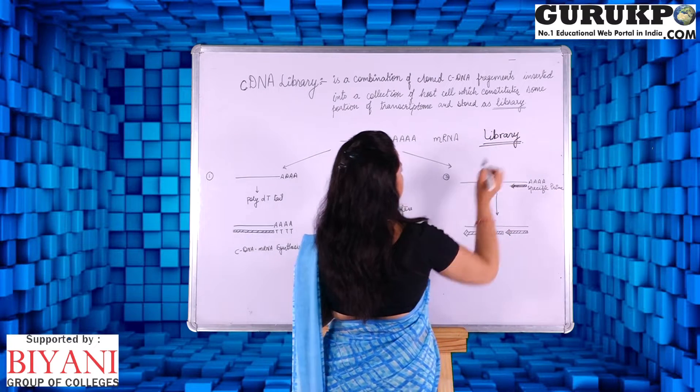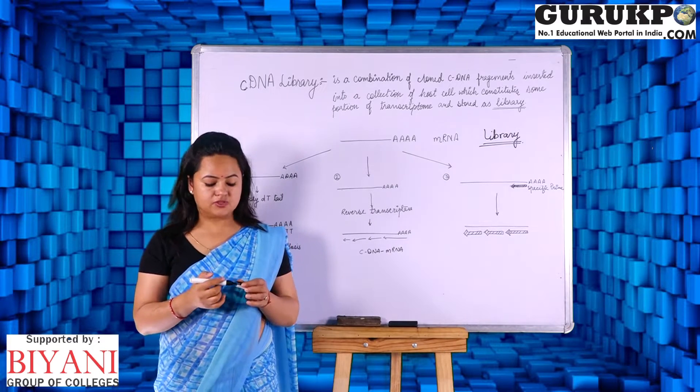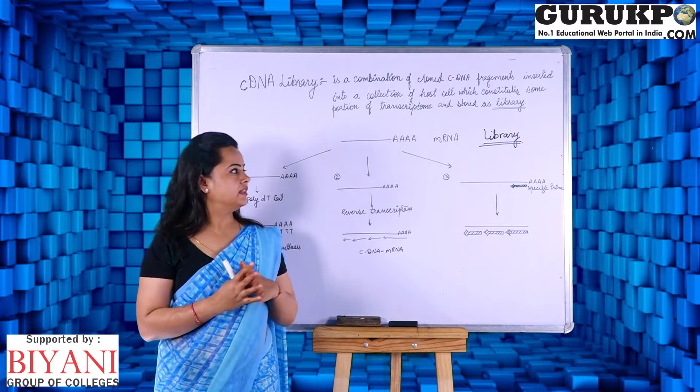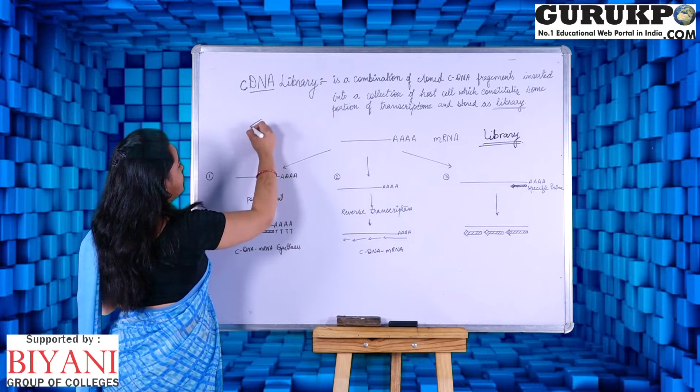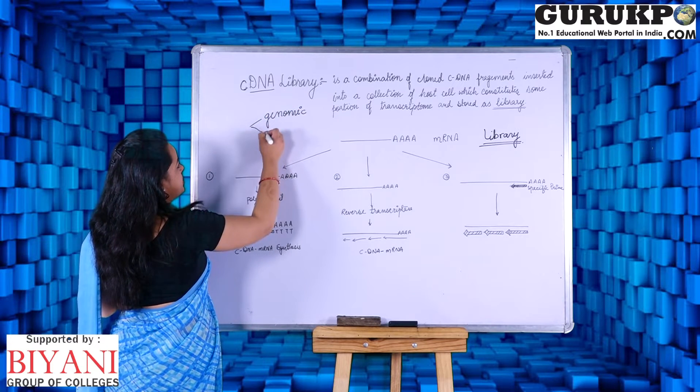In common, we know that a book library is the collection of all the books which comprises of all the subjects. Similarly, related to DNA, we can have two types of library: one is the genomic library and another one is cDNA library.